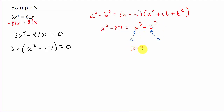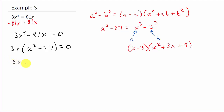So x minus 3 is the first factor. Then squaring the first term gives x squared, changing the sign gives plus 3x, and squaring the last term gives plus 9. So x cubed minus 27 factors into x minus 3 times x squared plus 3x plus 9. That leaves 3x times x minus 3 times x squared plus 3x plus 9 equals zero.